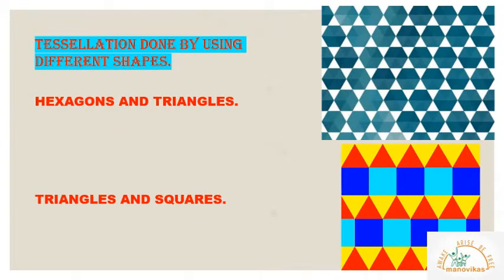Now, we will see some examples of tessellation formed by using a combination of more than one shape. The first figure is an example of tessellation formed by using hexagons and triangles. The green colored shapes are the hexagons and the white colored shapes in the first figure are the triangles.